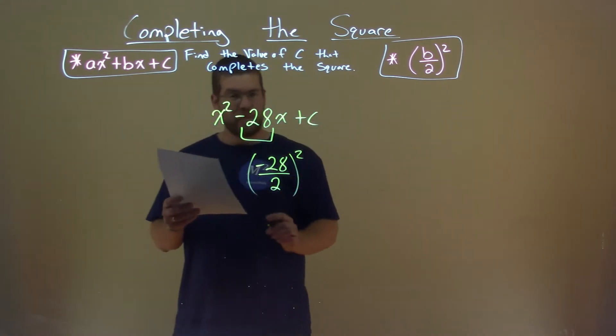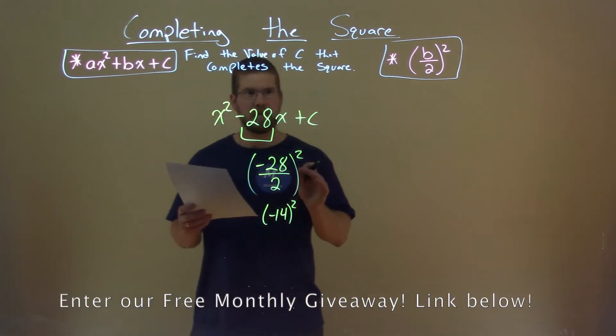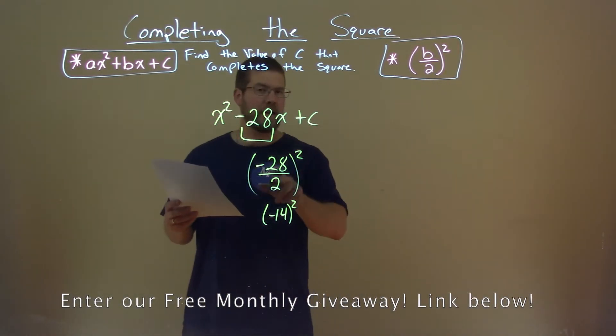So negative 28 divided by 2 is a negative 14. Well, negative 14 squared, remember a negative squared is a positive.